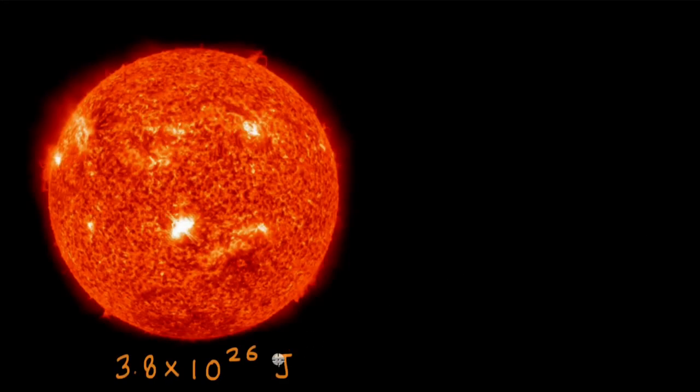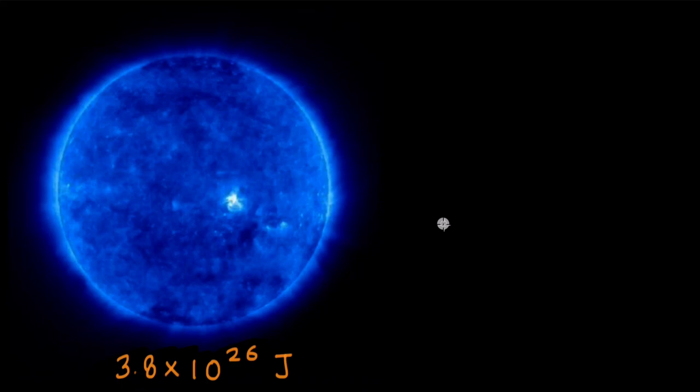Each second, the sun produces 3.8 into 10 to the power 26 joules of energy. In this video, we will see that the sun is not nearly hot enough to be able to produce this much energy. It is too cold. So cold that it shouldn't be alive. Let's see why.